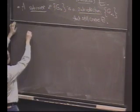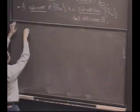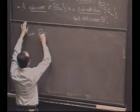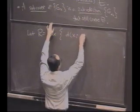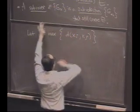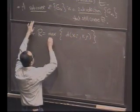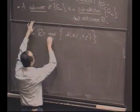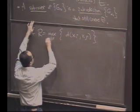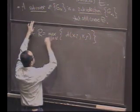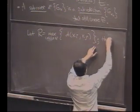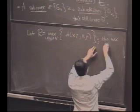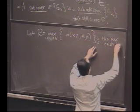So here's what we're going to do. Let's let big R be the maximum of the pairwise distances, d(xi, xj), where xi, ri, and j are between 1 and n. And now you should tell the reader that this maximum exists because what?